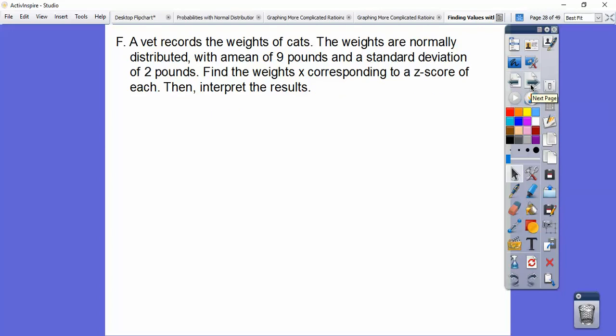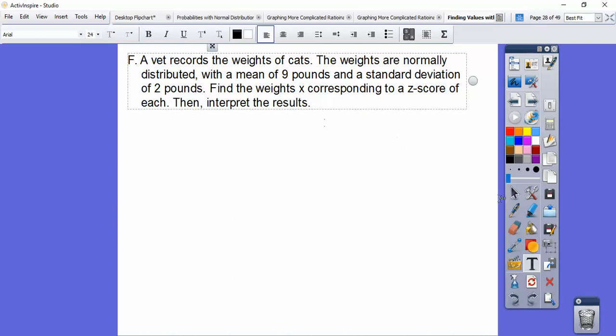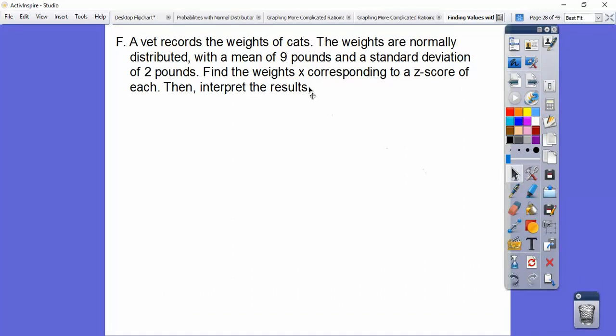So a vet records the weights of cats. The weights are normally distributed with a mean of 9 pounds and a standard deviation of 2 pounds. Find the weight x that corresponds to each z-score. So here we go. So here's z is 1.96. Here's negative 0.44, and then z equals 0.